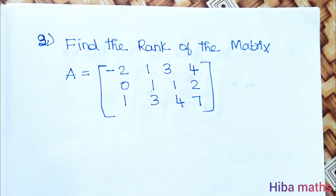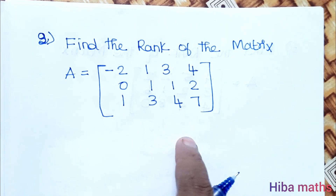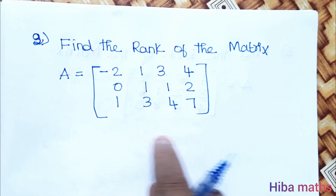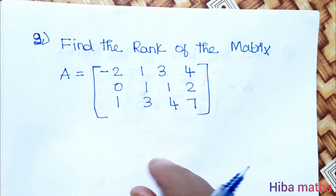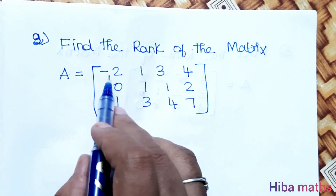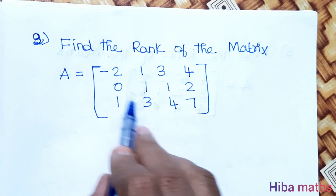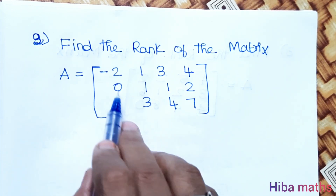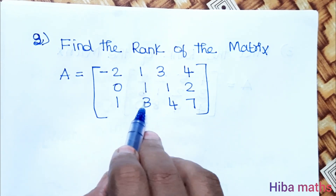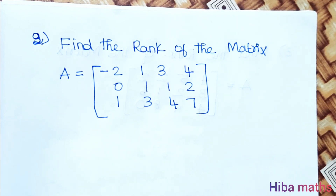Second question: find the rank of the matrix. The first row is [1, 1, 1, 4], the second row is [1, 4, 0], and there is a key row with zeros. We proceed by row reduction. If there are no zero rows, that is the rank.